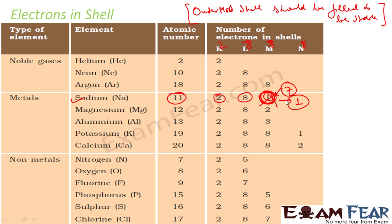Sodium knows that if it can just lose one extra electron which is causing it discomfort and instability, it will give that electron. It has to either get 7 extra electrons to reach complete stability, or lose 1 extra electron to get stability. So sodium has the tendency of losing one extra electron.